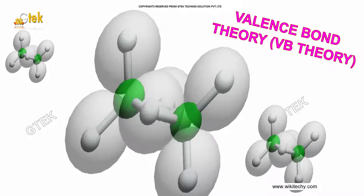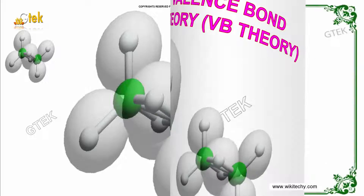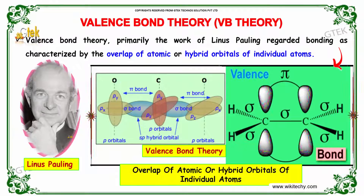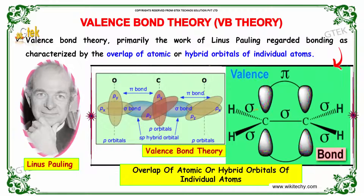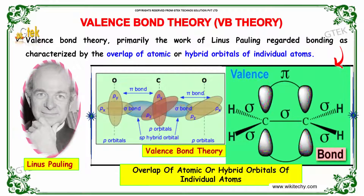We will discuss valence bond theory. Valence bond theory, primarily the work of Linus Pauling, regarded bonding as characterized by the overlap of atomic or hybrid orbitals of individual atoms. This is referred to as valence bond theory — specifically, the overlap of atomic or hybrid orbitals of individual atoms.